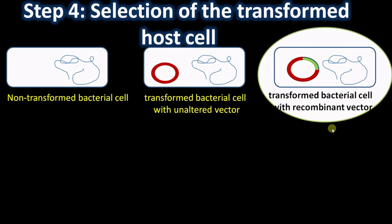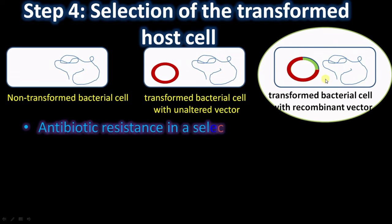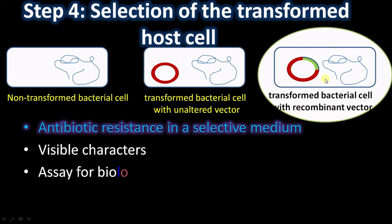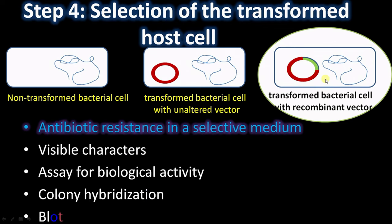There are different ways to select recombinant colonies. The first selection is by growing them in antibiotic-containing medium, since the vector has an antibiotic resistance marker — all growing colonies will have the vector. The second step is to distinguish between unaltered vector and recombinant vector colonies using methods like antibiotic resistance in selective medium, visible characters, assay for biological activity, colony hybridization, and plotting tests.